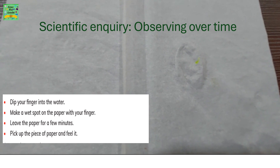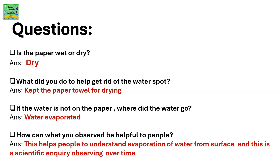Scientific inquiry — it's observing over time. Is the paper wet or dry? It's dry. What did you do to help get rid of the water? The paper towel for drying. Now, if the water is not on the paper, where did the water go? The water evaporated. How can what you observed be helpful to people? This helps people to understand evaporation of water from a surface. And this is a scientific inquiry observing over time.